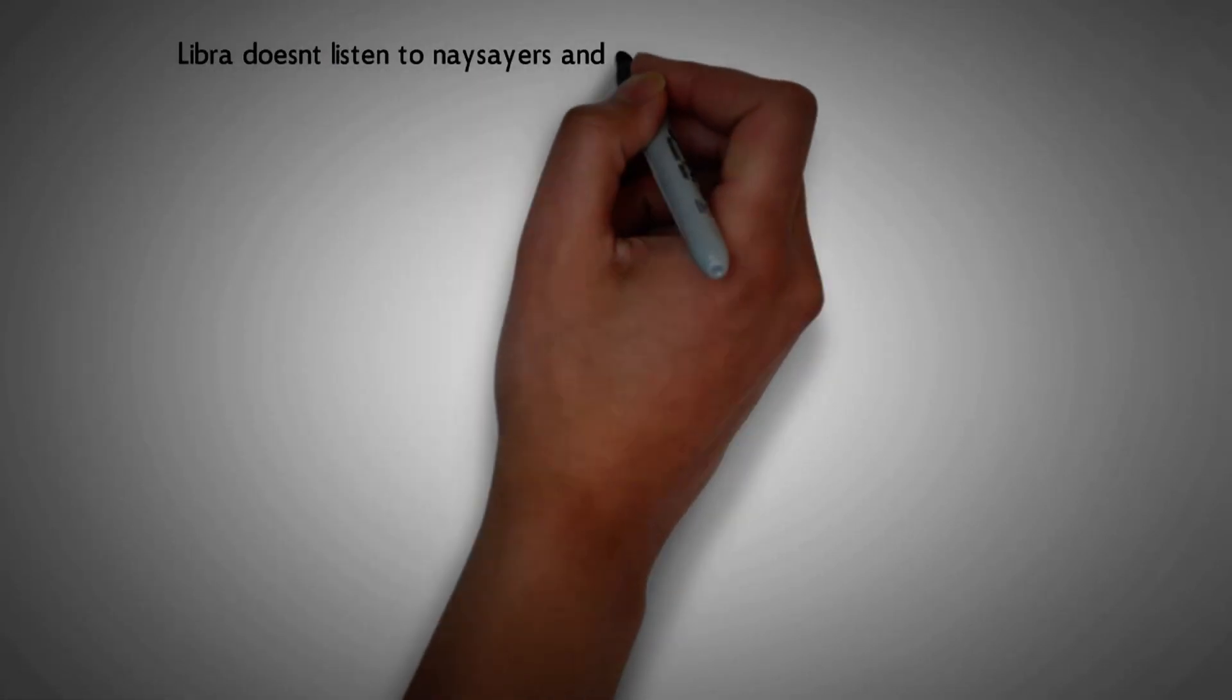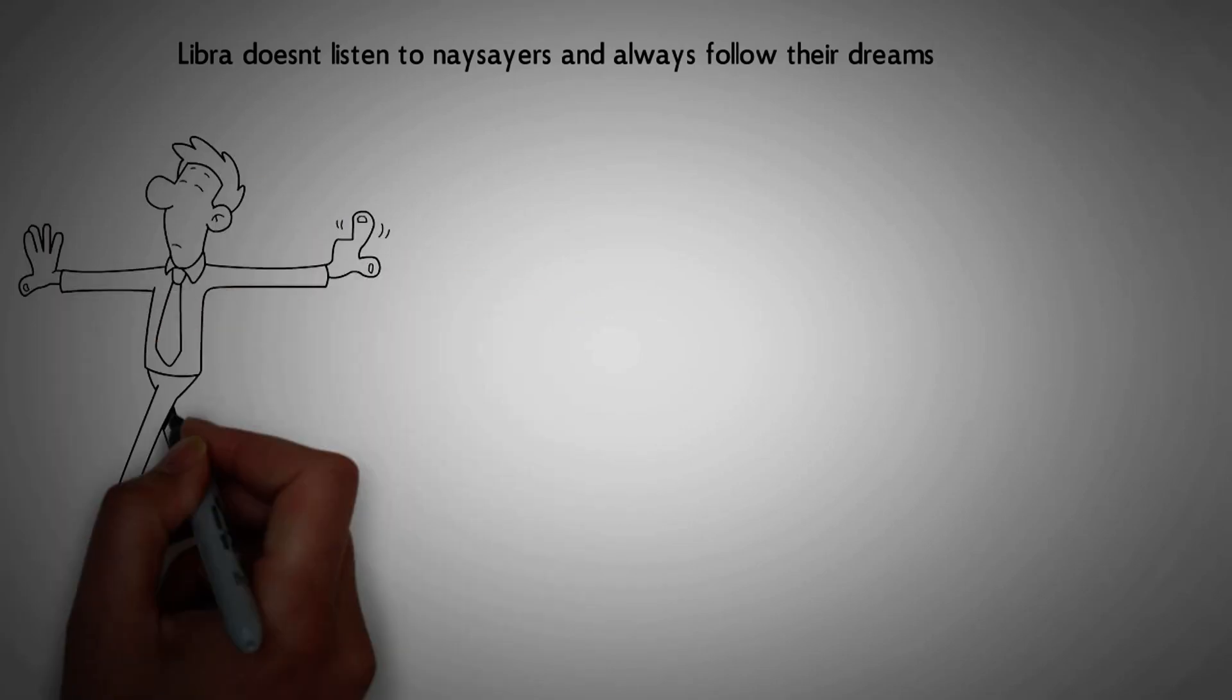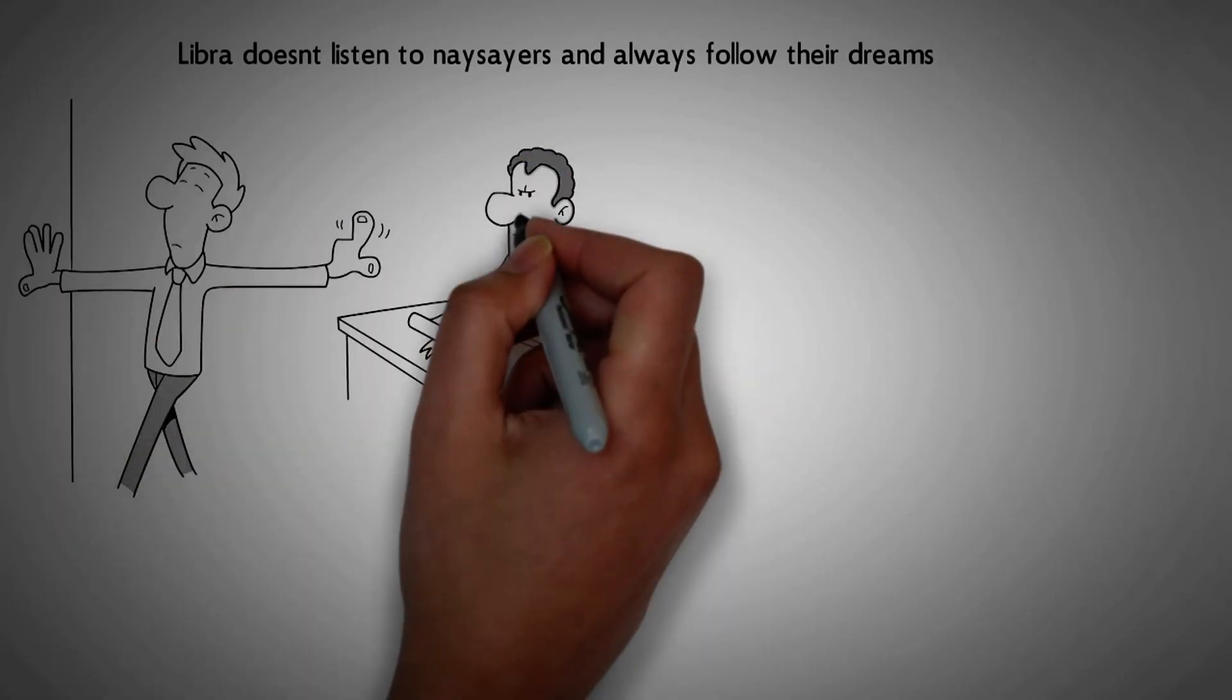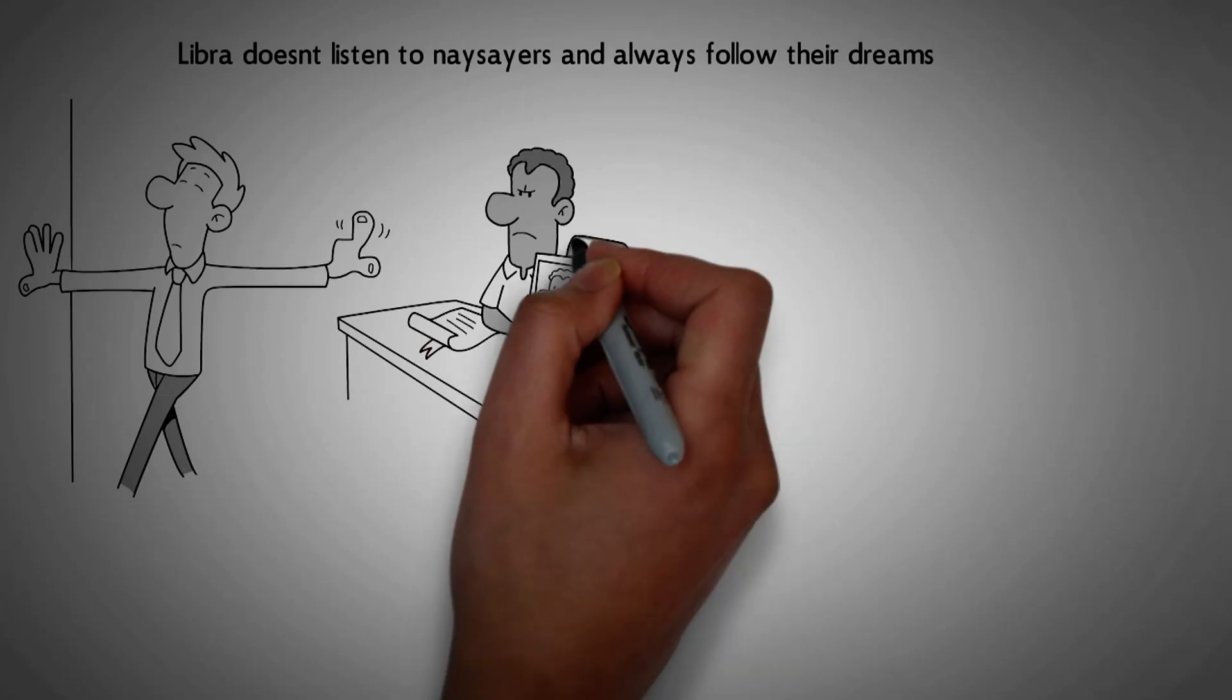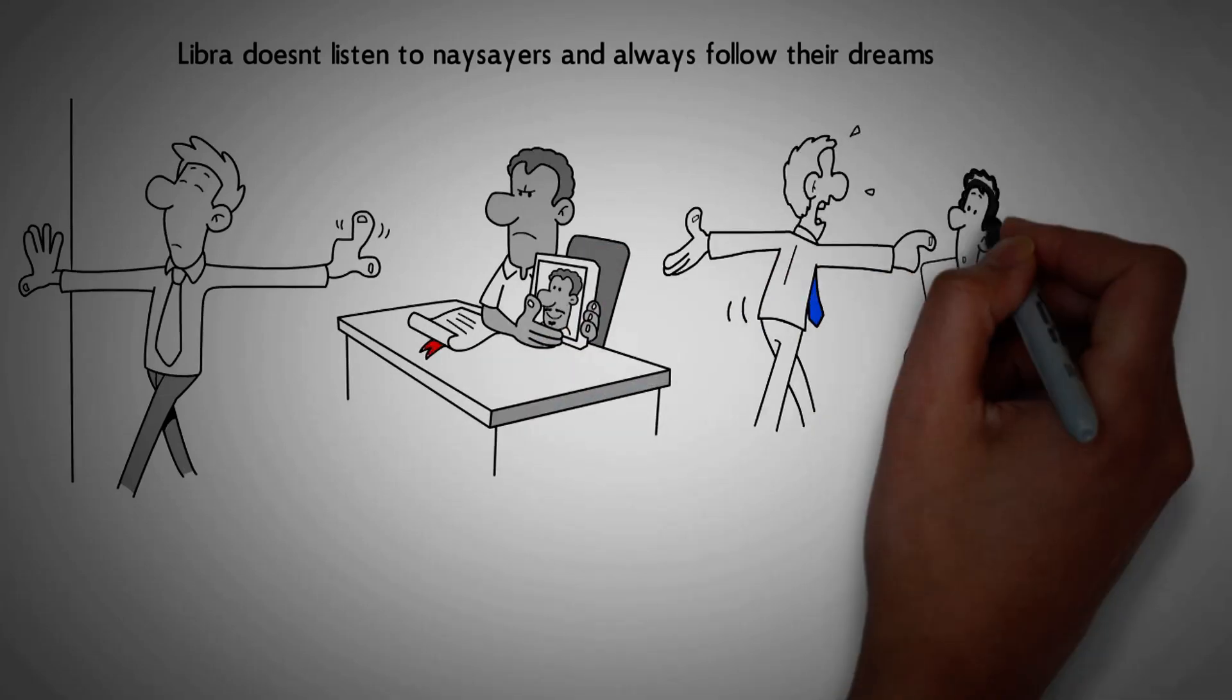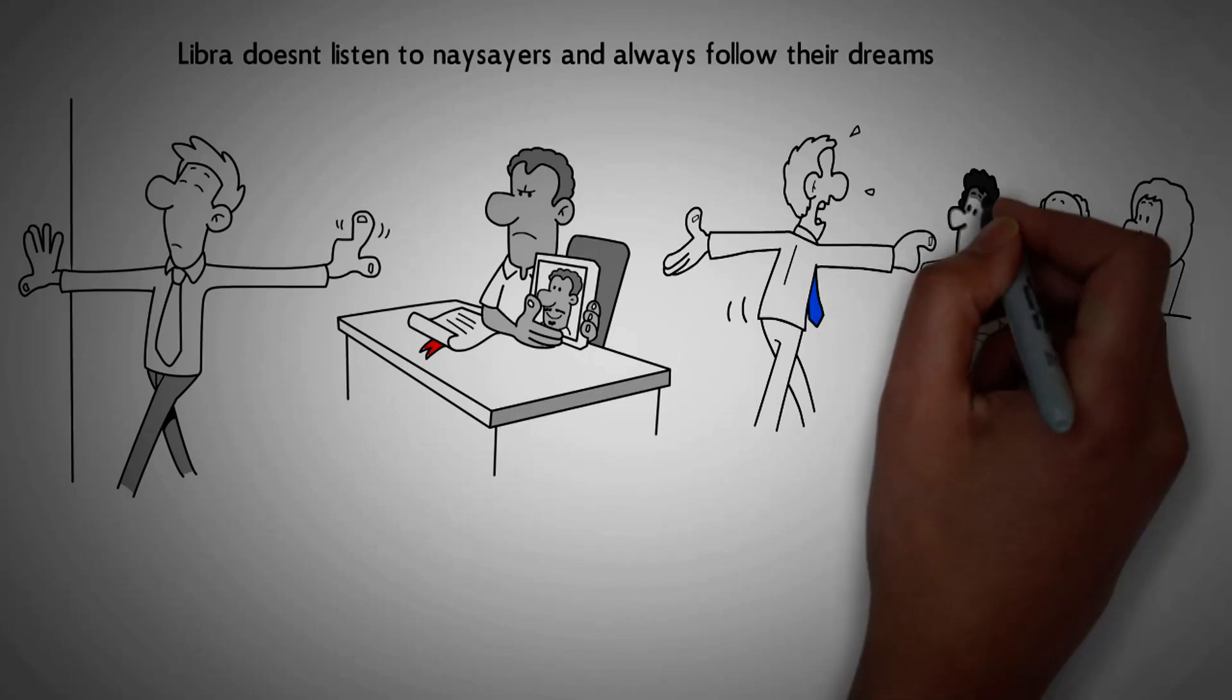Number 11. Libra doesn't listen to naysayers and always follow their dreams. Libra avoids people with negative thoughts. They don't associate with people who are always whining and not taking initiatives to make improvements. They take action and use their willpower to make things possible.